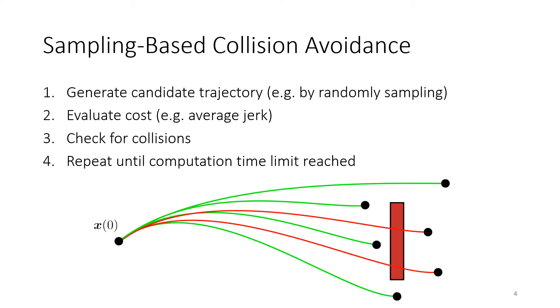And then repeat this process until we find, in some sense, the best trajectory from those candidate trajectories. Here we choose to specifically focus on the collision checking step of this process because that's typically the most computationally expensive step.